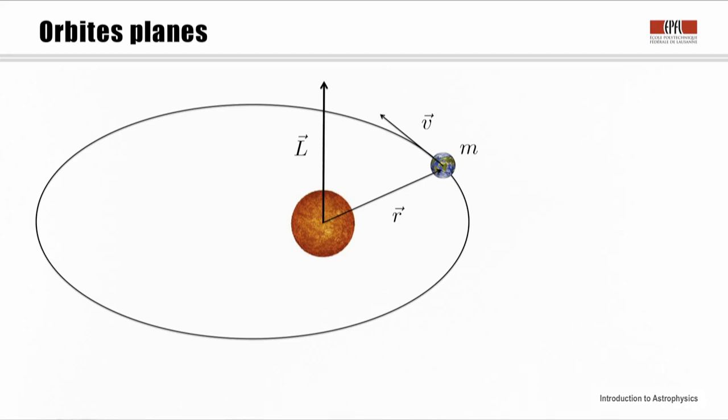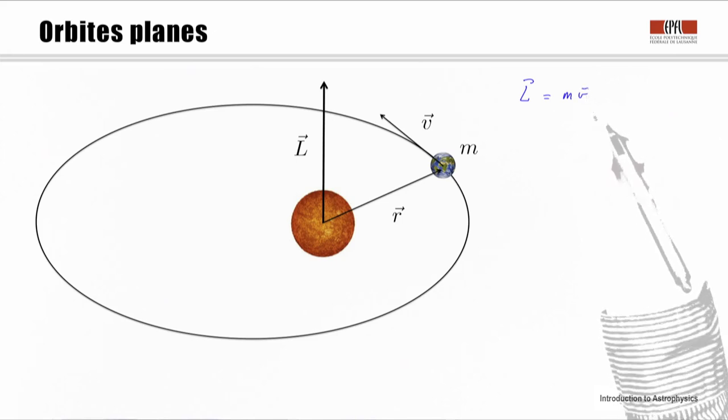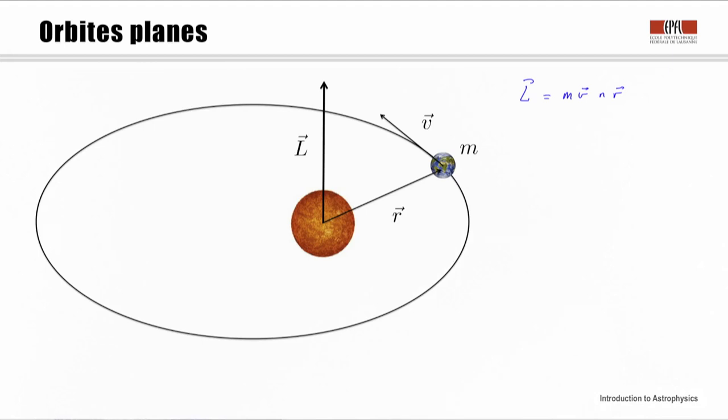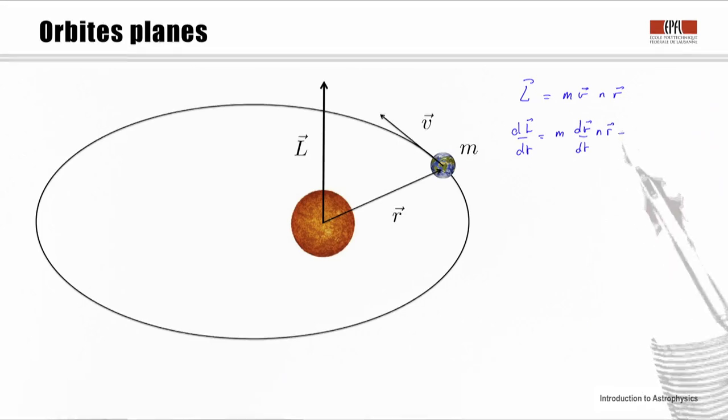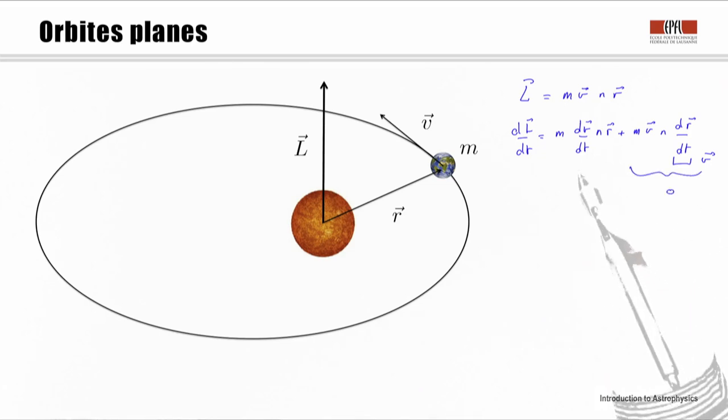Now back to the first Kepler's law. We will not prove here that the orbits are elliptical, but we will quickly show that the orbits are flat. To this end, we will write the angular momentum L = mv cross r, where v is the velocity vector and r is the radius vector. Let's take the derivative of this angular momentum with respect to time. We immediately see here the velocity vector.